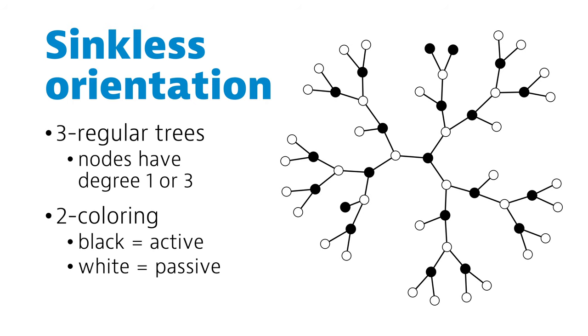And just like last week, we assume that the nodes are split in two classes, active and passive. So we have a two-coloring of the tree.